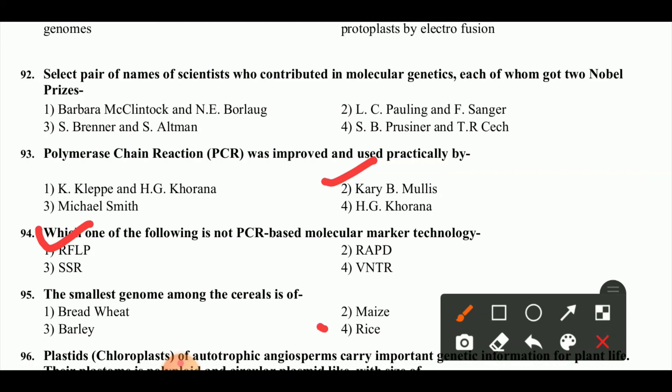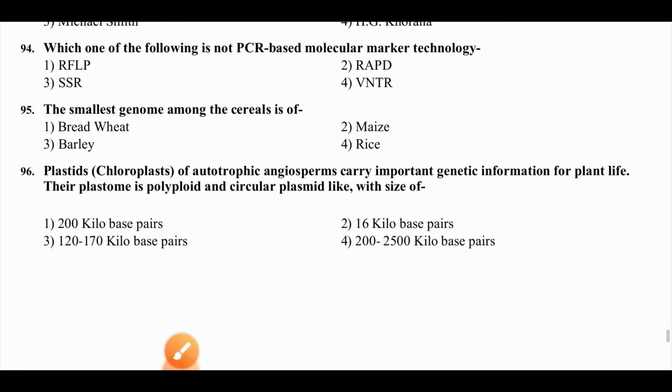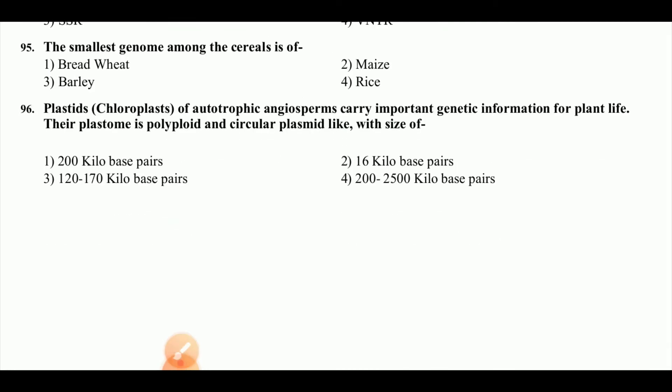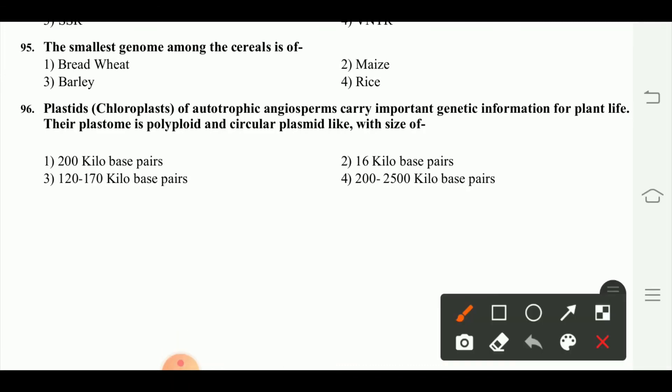The smallest genome among the cereals is found in rice. The plastid chloroplast of autotrophic gymnosperms carries important genetic information for plant life. Their plastome is polyploid and circular, with a size of 120 to 170 kilobase pairs.